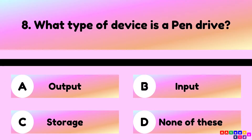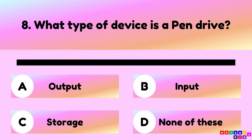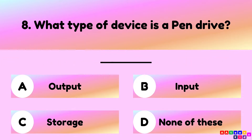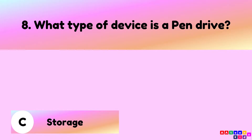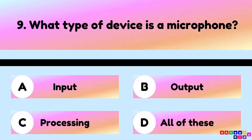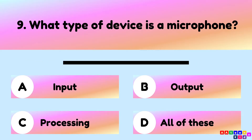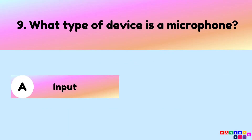What type of device is a pen drive? A pen drive is a storage device. What type of device is a microphone? A microphone is an input device.